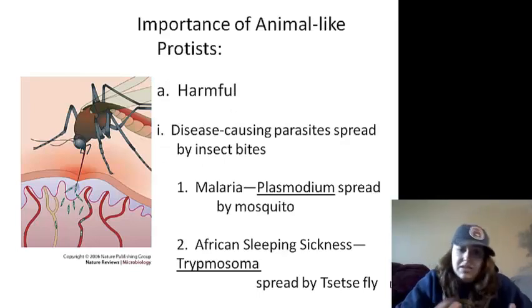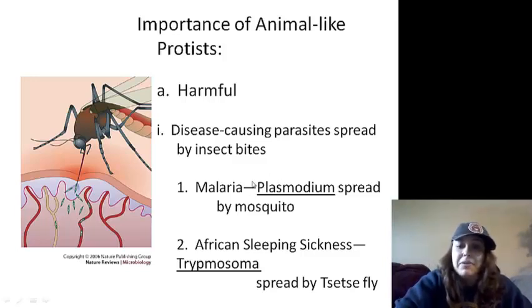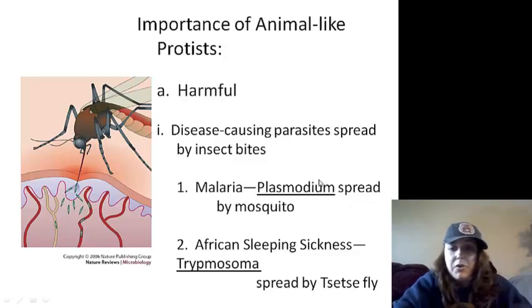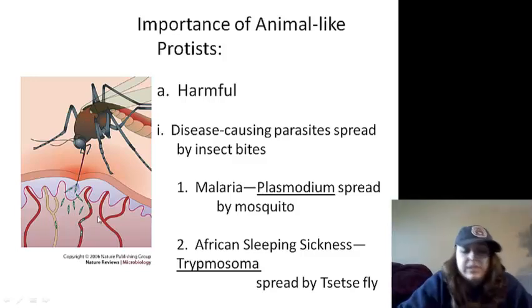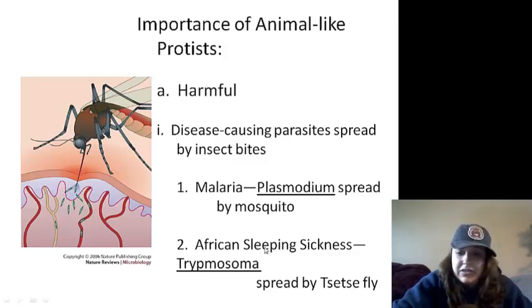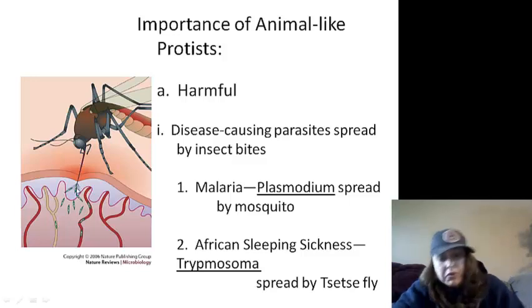Importance of animal-like protists — they can be harmful and cause disease. You've all heard of malaria. Malaria is caused by a Plasmodium protist and spreads through mosquitoes, which introduce these organisms into our blood system and cause malaria. Same type of deal with African sleeping sickness. We have Trypanosoma, which is another type of animal-like protist, and it's spread by the tsetse fly, which pokes us and introduces this harmful protist.